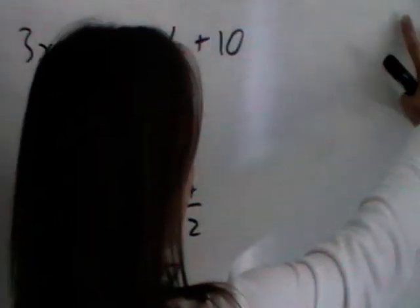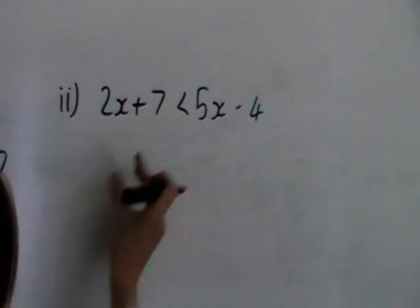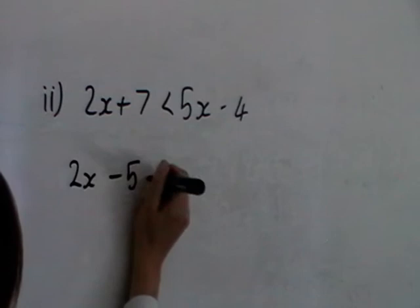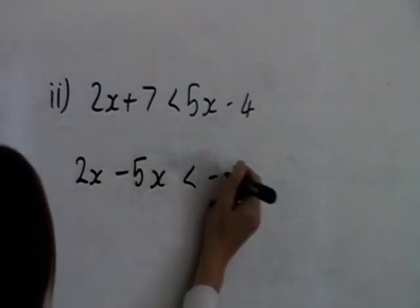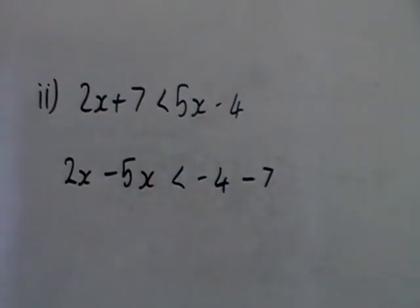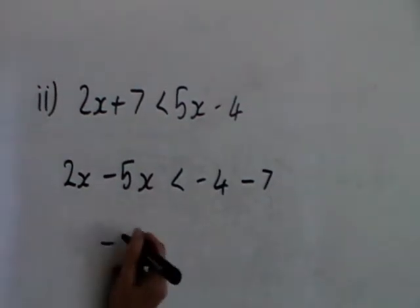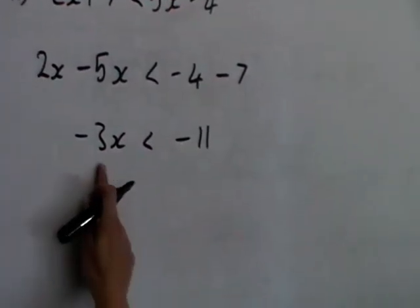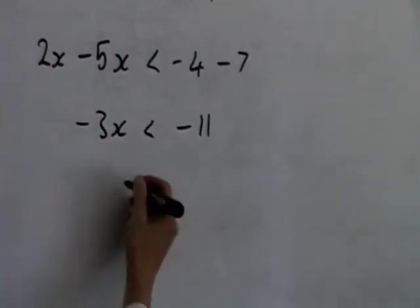As we move on to the next one, again we get all the x's on one side, so we leave the 2x, bring the 5x over so we subtract, leave the minus 4 and subtract the 7 on the other side. So this will give us minus 3x, this will give us minus 11. To get the x on its own, we need to divide both sides by minus 3.